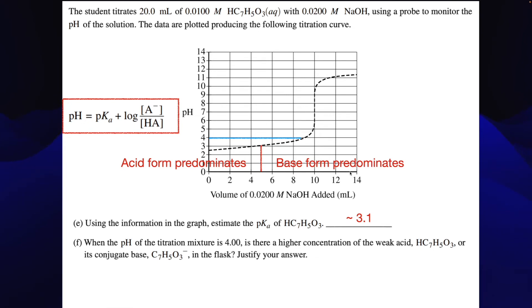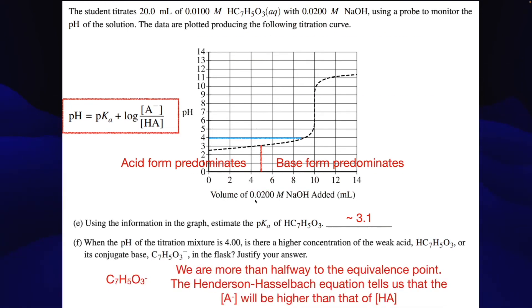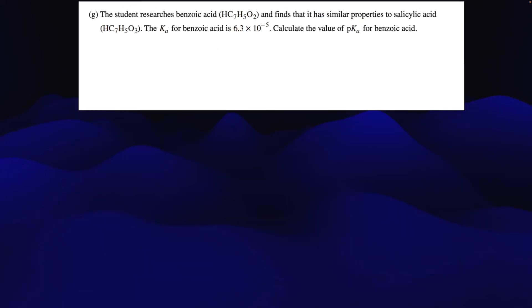And so if we're in anywhere in this area here, that means the base form is going to predominate, which means that this ion is going to be, since it's our conjugate base, the most prevalent species between the weak acid and the conjugate base in the flask. How can you justify that? Well, we're more than halfway to the equivalence point. Okay, remember, this is our halfway point. And so again, using the Henderson-Hasselbalch equation, this number has to be bigger, and this number has to be smaller. And that makes sense because our pH has to be above the pKa. It has to be above 3, and it is, it's 4. So it's got to be higher on our list here.